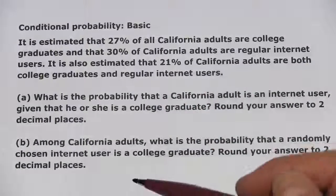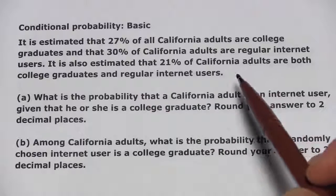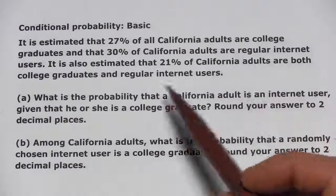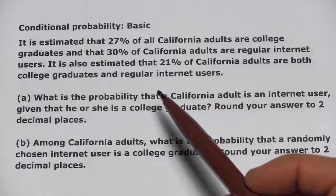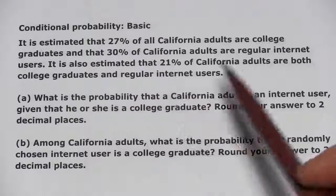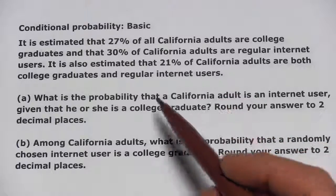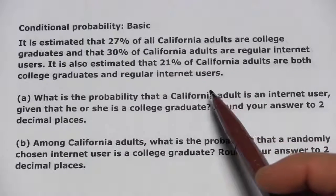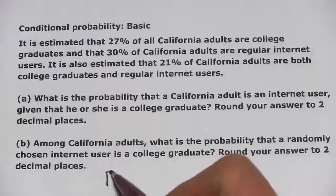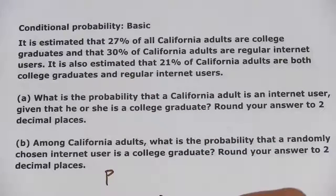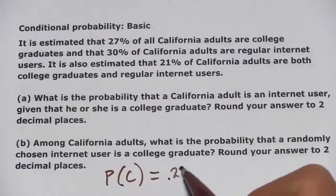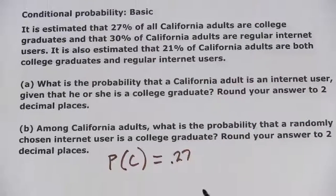Let's look at this question. It says that 27% of California adults are college graduates and 30% of California adults are regular internet users. This must be an old question. It is also estimated that 21% of California adults are both college graduates and regular internet users. We have the probability that someone is a college graduate — I'm going to call that P of C — and that is 0.27, just converting the percent to a decimal.